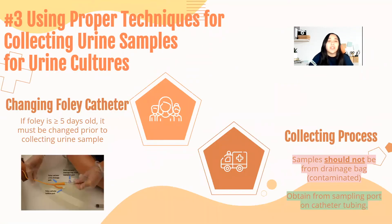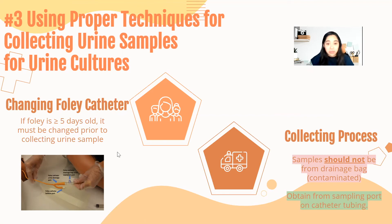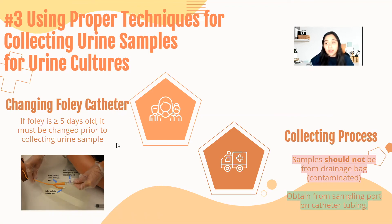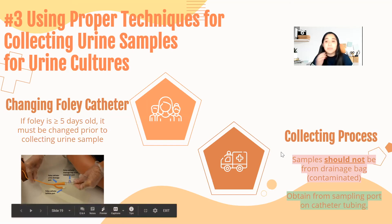The third thing nurses can do is use proper techniques for collecting urine samples for urine cultures. First, make sure to change the Foley if it is greater than or equal to five days old before collecting the urine sample. If it is a CUDA catheter, check with the ordering physician or urology to see if they want the catheter removed prior to collecting the sample, since CUDAs are harder to place. Urine samples should never be collected from the drainage bag as it is contaminated, even if it is a new Foley. Always get the sample from the sampling port on the catheter tubing. To collect: clamp the tube at least three inches below the sampling port, wait until urine is visible, clean the port with an alcohol wipe and let it air dry, then use aseptic technique to attach an uncapped syringe to the port and draw out the urine. Then unclamp the drainage tube — do not forget this step, as urine can back up into the Foley and cause further problems.